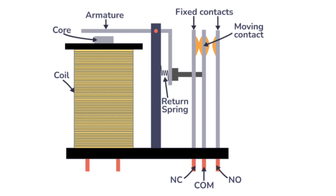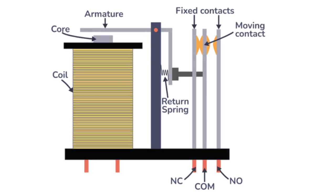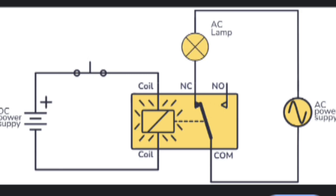It mainly consists of a coil, armature, contacts, and a spring. Step-by-step working of a relay. Coil Activation: When an electrical current passes through the coil, it generates a magnetic field. This magnetic field attracts the armature.